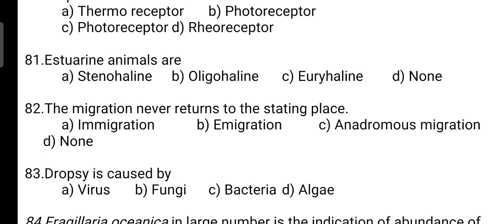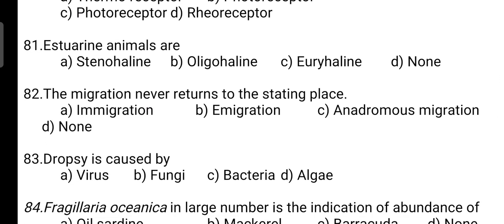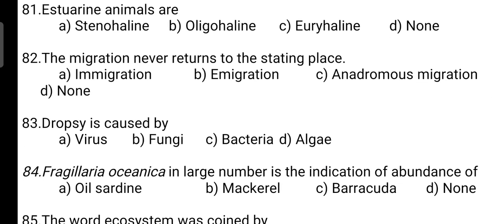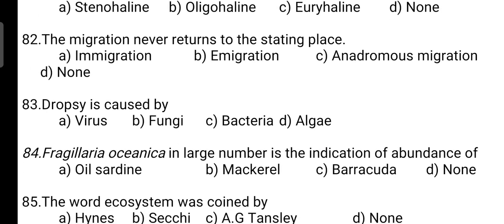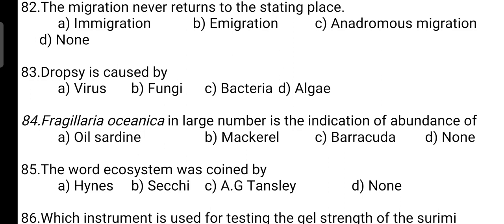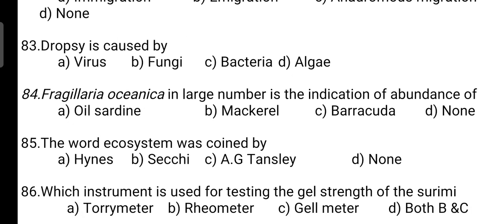Estuarine animals are: correct answer is Option C — these are euryhaline. Next, migration that never returns to the starting place is known as: correct answer is Option B — it is emigration. Next, dropsy is caused by: correct answer is Option C — it is bacteria.